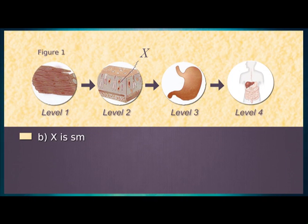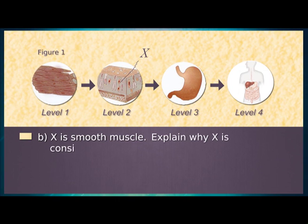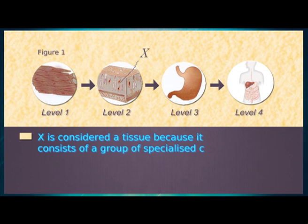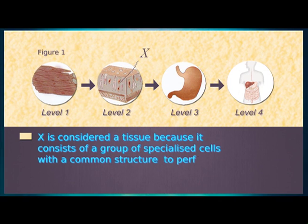Part B: X is smooth muscle. Explain why X is considered a tissue. One mark. X is considered a tissue because it consists of a group of specialised cells with a common structure performing a specific function.